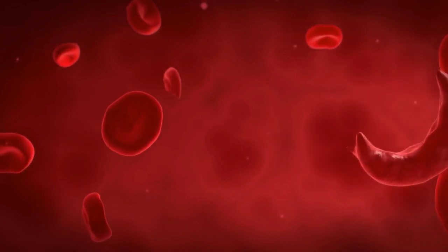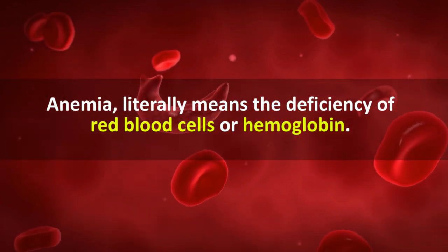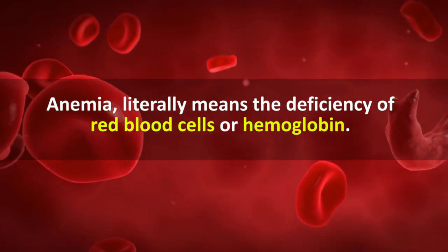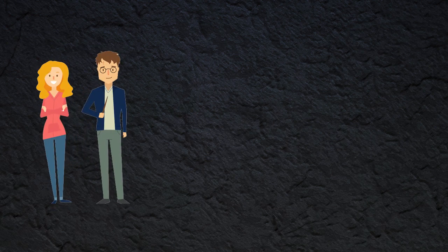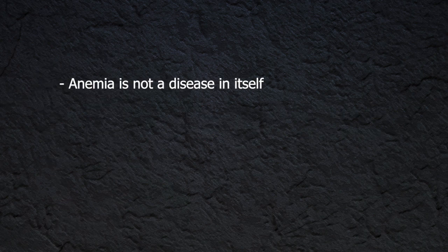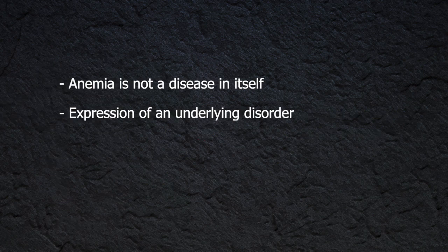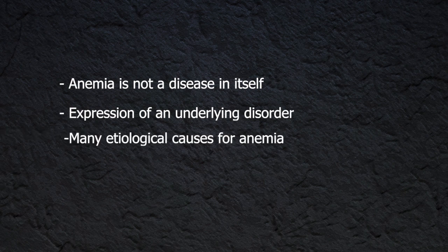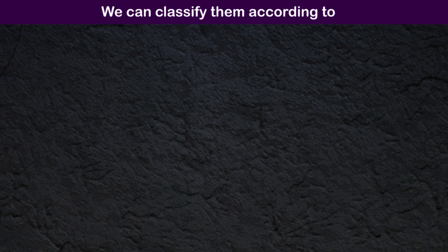The word anemia literally means the deficiency of red blood cells or hemoglobin. A person is considered anemic if he or she has a low hemoglobin level for their age and sex. Anemia is not a disease in itself but rather an expression of an underlying disorder. There are many etiological causes for anemia.